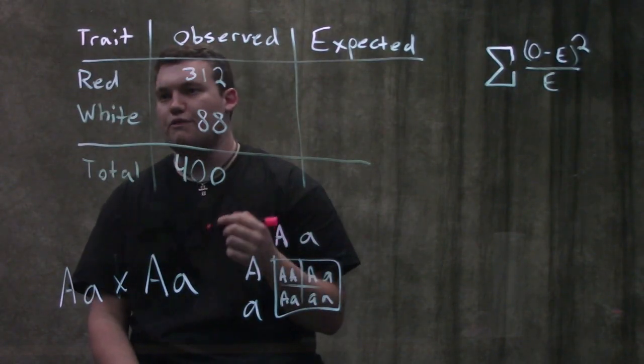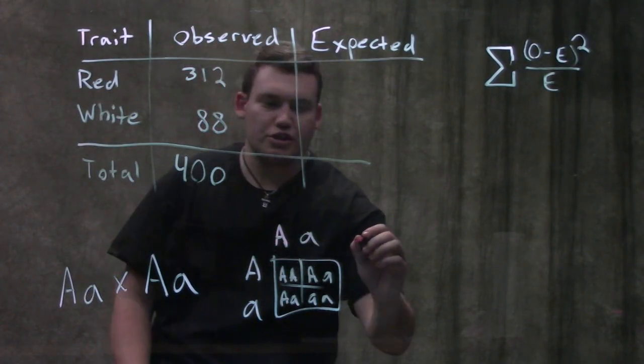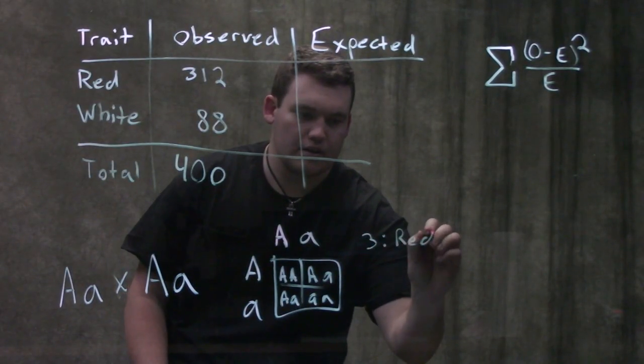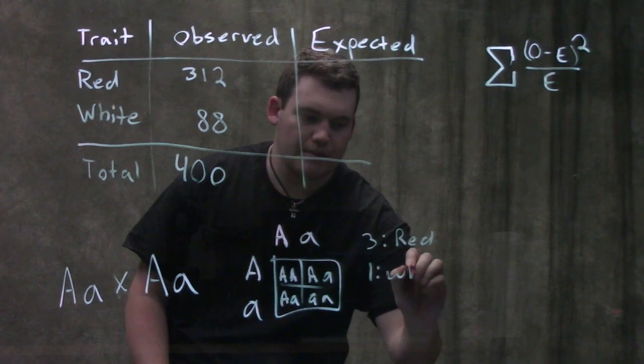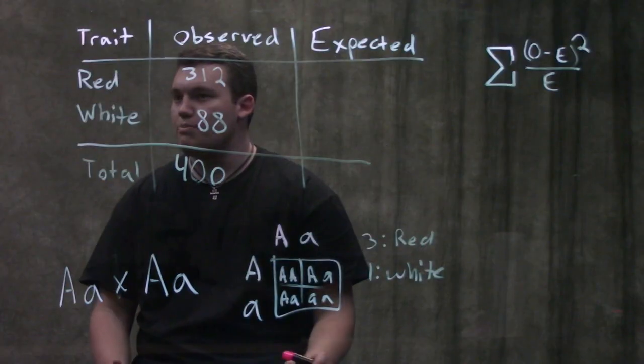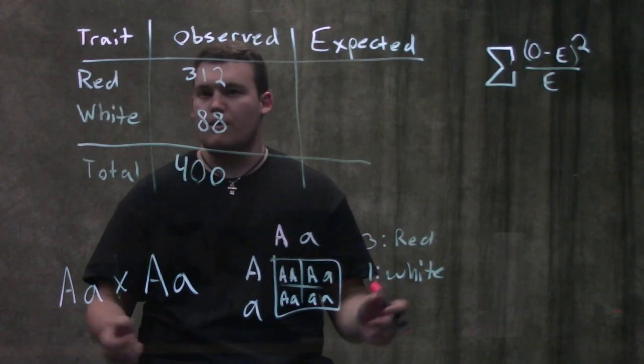So we're gonna end up with exactly what you guys think. It should be a three to one phenotypic ratio. So we should have three red and one white because we said that the red is dominant to the white supposedly. That's what we're here to test out.